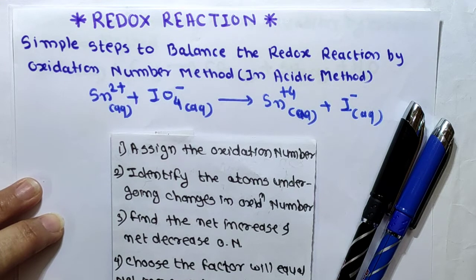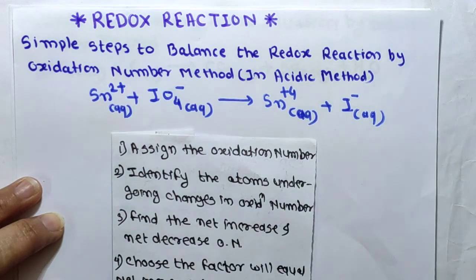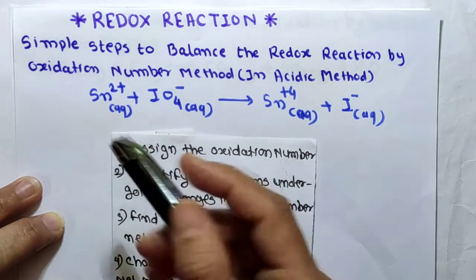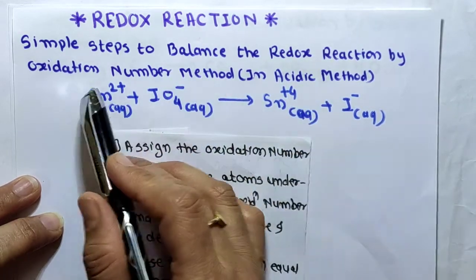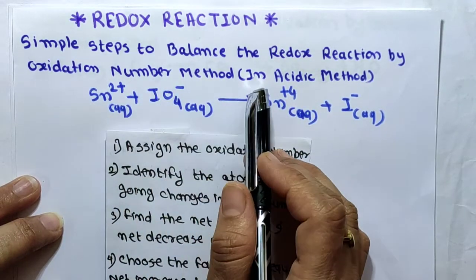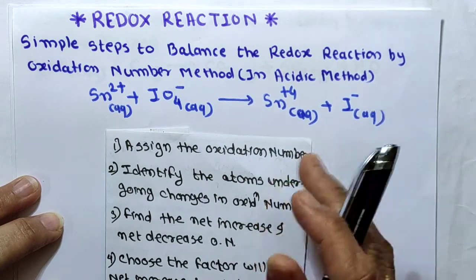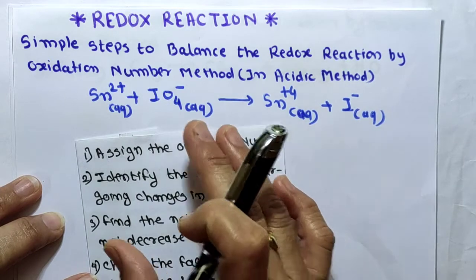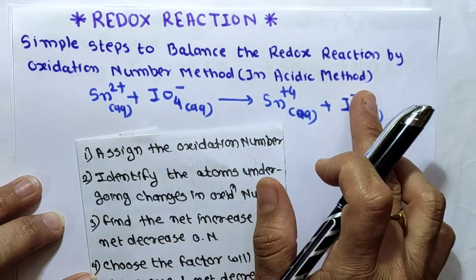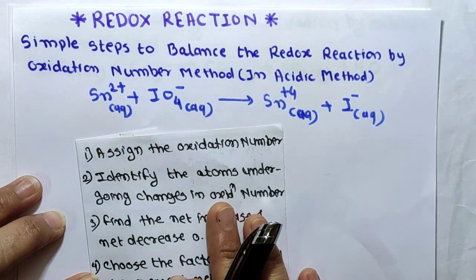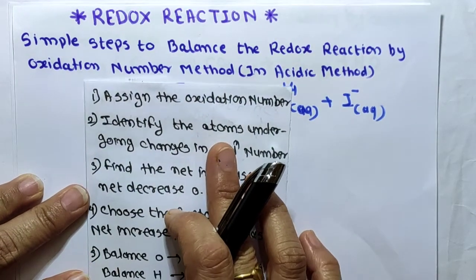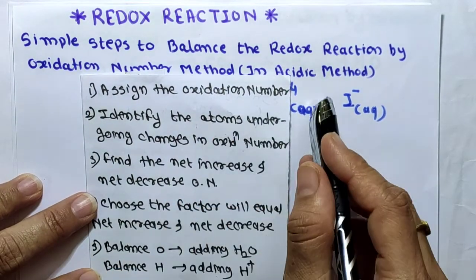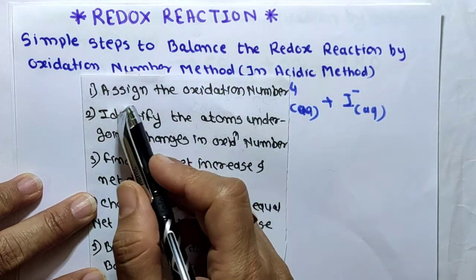Hello students, welcome to my channel. In this channel I will teach chemistry in the simplest way. Today's topic is Chapter Redox Reaction — simple steps to balance the redox reaction by oxidation number method in acidic medium. I will give you five simple steps. Let's start the session and see which five steps are involved.